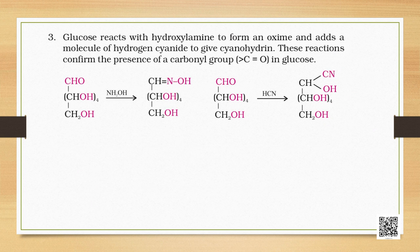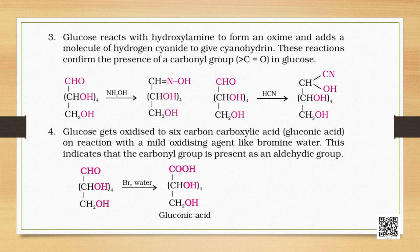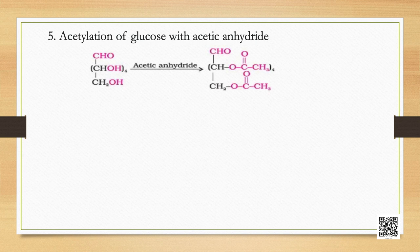Glucose reacts with hydroxylamine to form an oxime and adds a molecule of hydrogen cyanide to give cyanohydrin; these reactions confirm the presence of a carbonyl group in glucose. Fourth, on reaction with a mild oxidizing agent like bromine water, it gets oxidized to a six-carbon carboxylic acid, indicating that the carbonyl group is present as an aldehyde group.